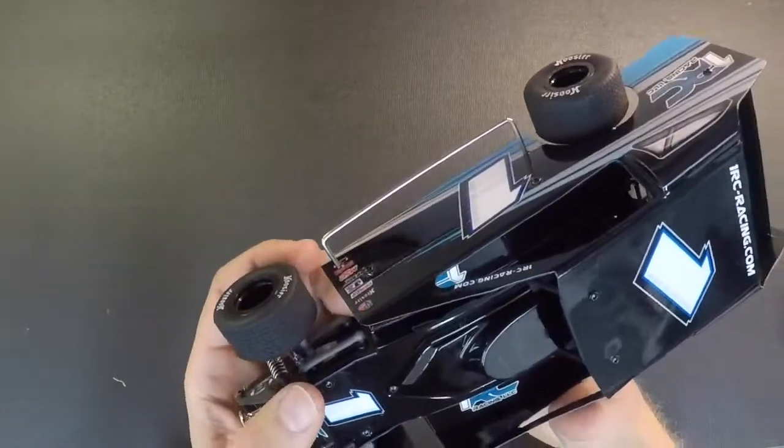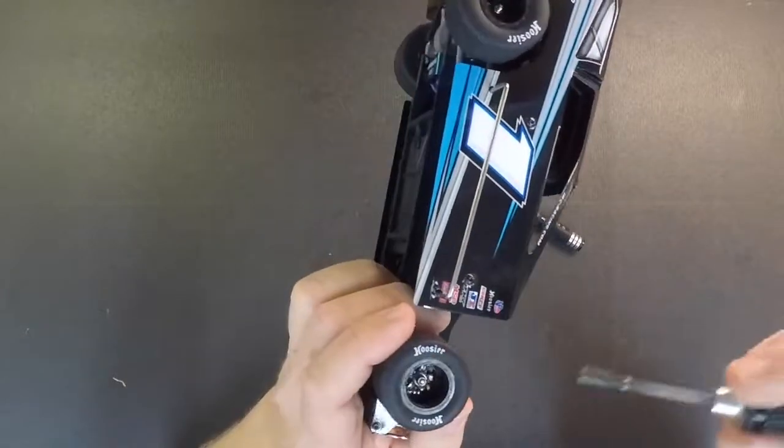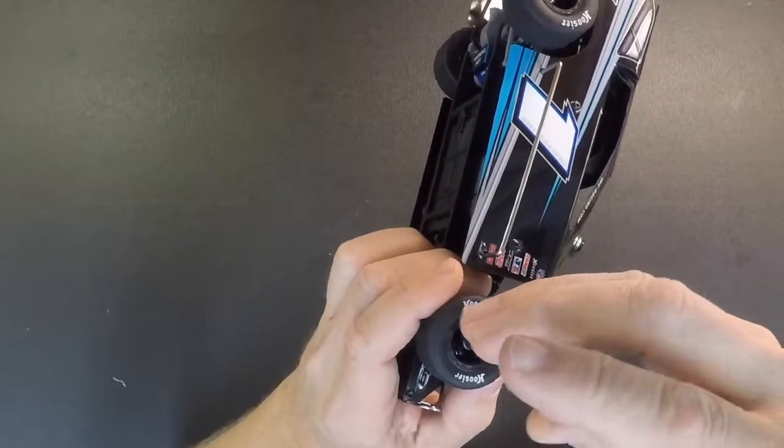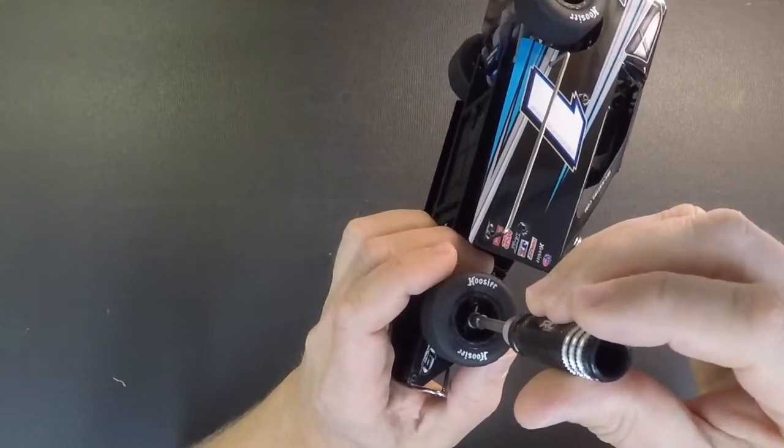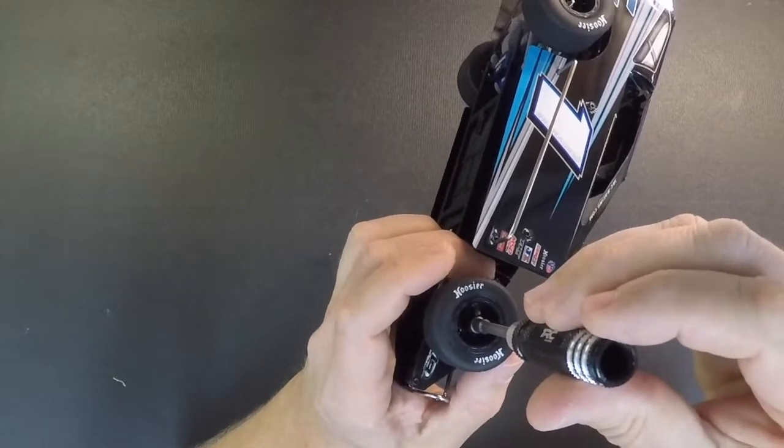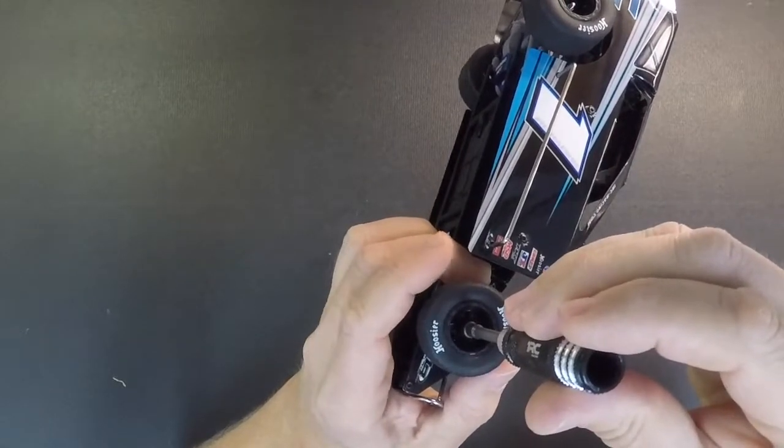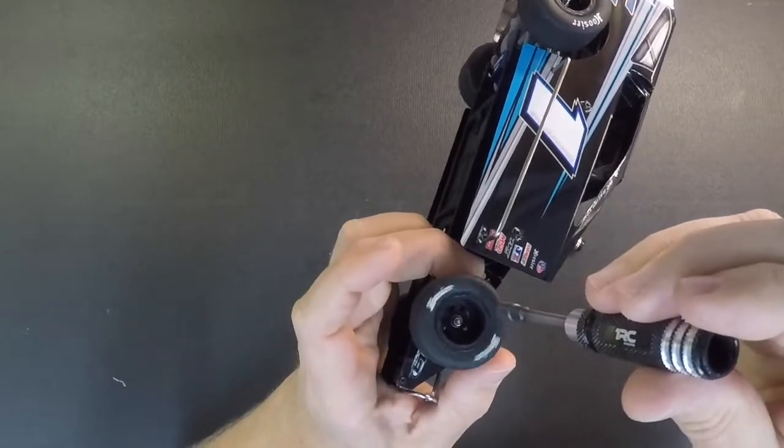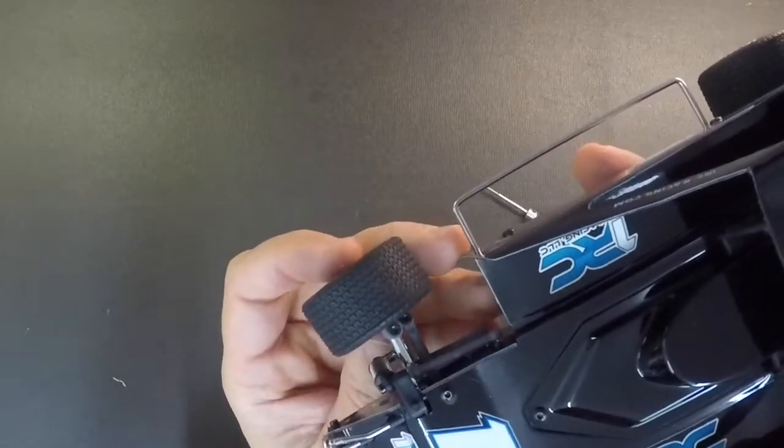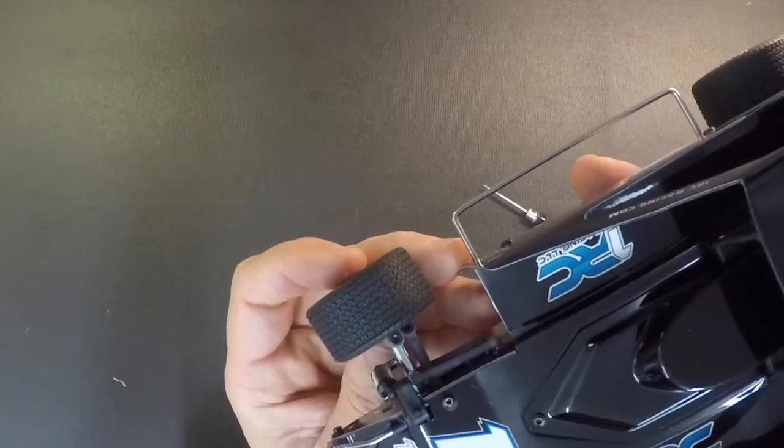The other thing you can do is when you tighten the wheel nuts down, we recommend just get those snug and then just back them off just ever so slightly until the tire just rolls nice and free. And you can see by doing those two steps that took a lot of the rock out of the front tires.